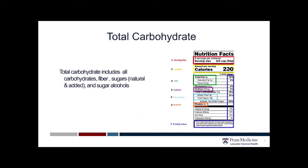Four of those grams are coming from fiber, and 12 of them are coming from the total sugar content. Of that sugar, this food includes 10 added sugars. The 12 and the 4 together gives us 16 grams of carbohydrate, and the additional outstanding grams are usually found in the actual wheat or grain used to make that product.